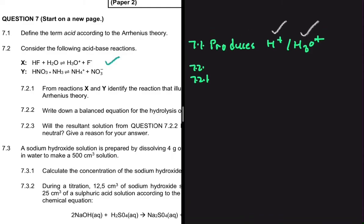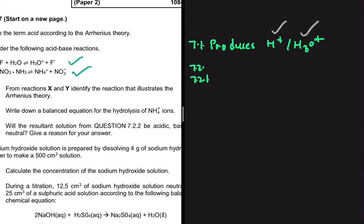Consider the following acid-base reactions: reaction X and reaction Y. The first question asks us to identify the reaction that illustrates the Arrhenius theory. To recap, an acid is a substance that produces H+ or H3O+.